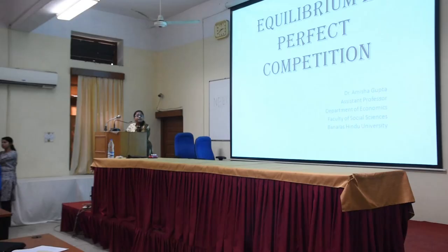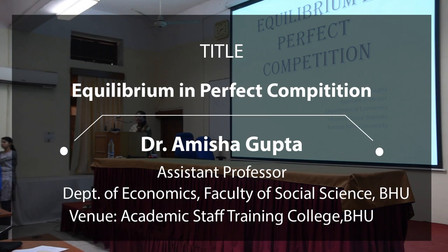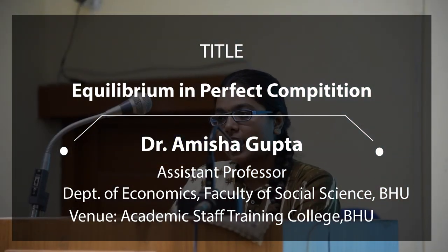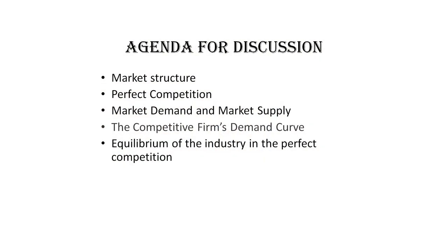My topic of presentation is equilibrium in perfect competition, but due to shortage of time my topic has been confined only to short run equilibrium in perfect competition. The agenda for discussion is: what is market structure, what is perfect competition, what is market demand and supply, what is individual demand and supply, and the equilibrium of industry in perfect competition.